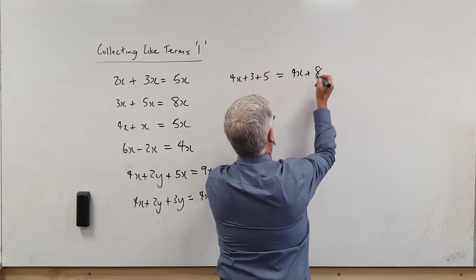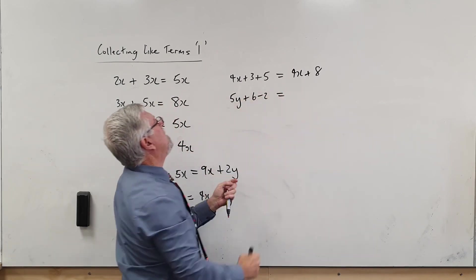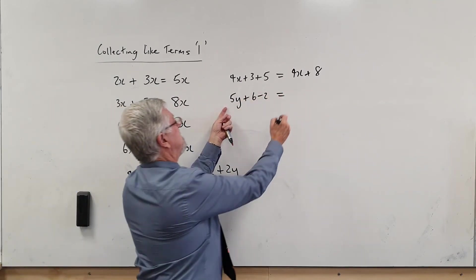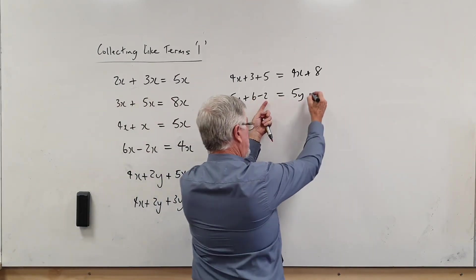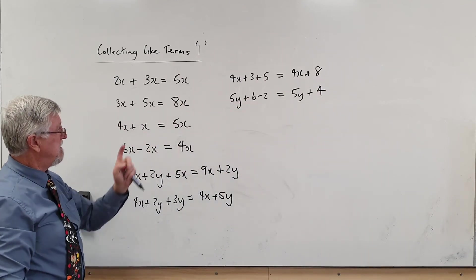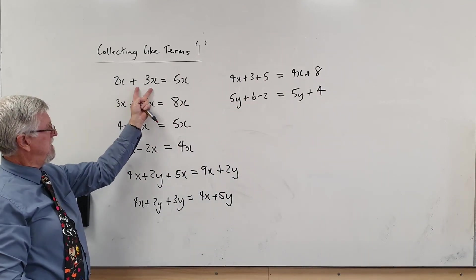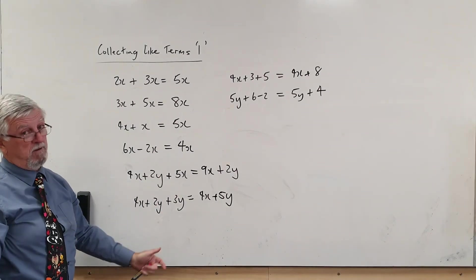So if I had 5Y plus 6 minus 2, I've got a 5Y, and 6 take 2 is actually 4. But what's the trap? It's actually a plus 4. So you can add together if they're both X, if they're both Y, if they're both any other letter. If they're just normal numbers, I can add them together or subtract them.